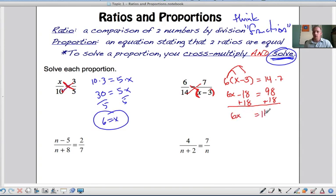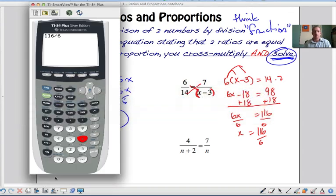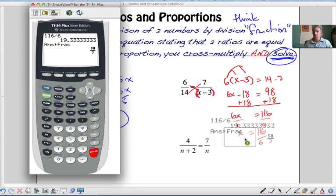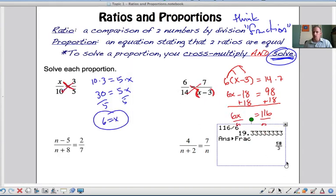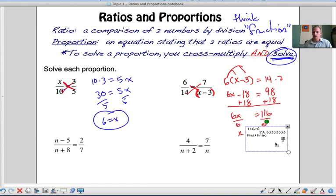6x equals 116 and I divide by 6. So 116 over 6, I'm going to see if it's an even decimal, if it goes in evenly or if it works out to be a fraction. So 116 divided by 6 is 19.3 repeating. And if I want that to be a fraction, I said math, that first option, so enter, enter. So it's either 19.3 repeating or 58 and 3 thirds.